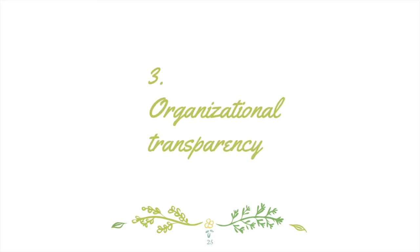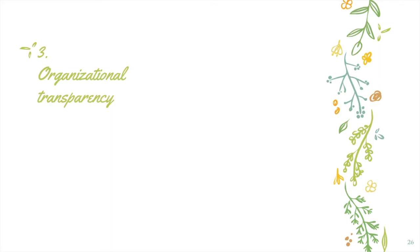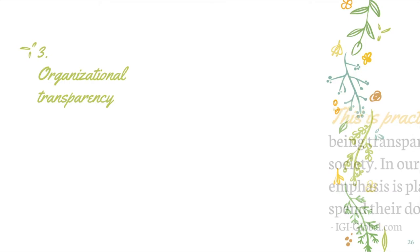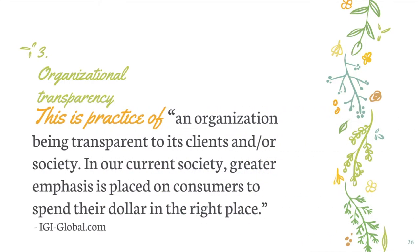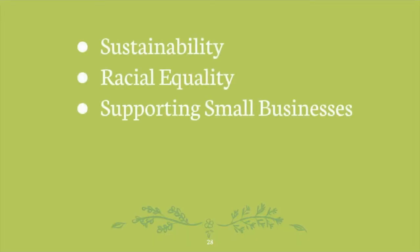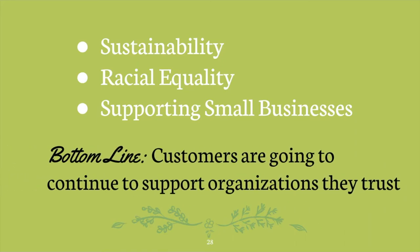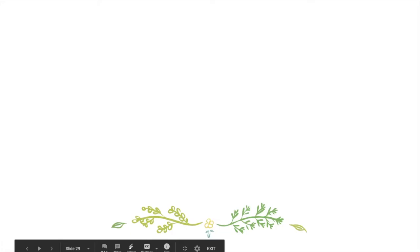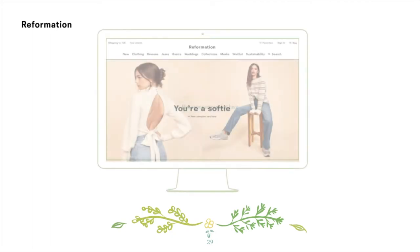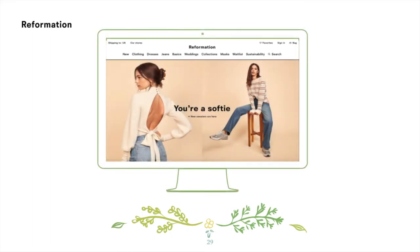Now let's cover our final trend, organizational transparency. Organizational transparency is a term that's been around for many years, defined as an organization being transparent to its clients and or society. In our current society, there is a greater emphasis placed on consumers to spend their dollar in the right place. Whether consumers feel passionate about sustainability, racial equality, or supporting small businesses, the bottom line is that consumers are going to support an organization that they trust. They will cease to support any organization that betrays their trust. A recent example that made headlines revolves around a clothing brand named Reformation, known for being a popular, sustainable brand with a high price tag.